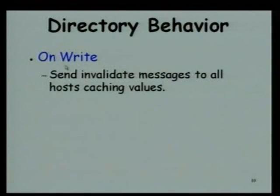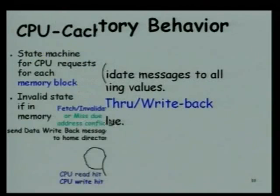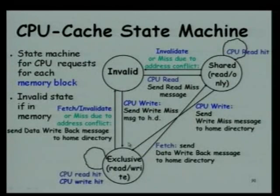On a write, we need to send an invalidate message to all hosts caching the value. On a write-through or write-back, we will have to update the value. To understand it fully, let us look at the specific actions for specific requests.